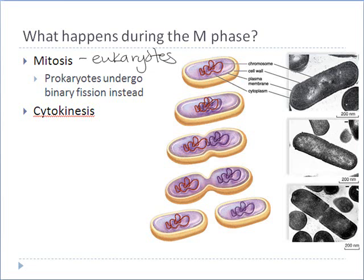Prokaryotes do not have a nucleus, so they do not have to deal with some of the same challenges that a eukaryote does when dividing up the material inside the nucleus. Because they do not have a true nucleus and they only have one circular chromosome, the process of cellular division for a prokaryote is much easier. The process is called binary fission, which means literally to split into two parts.